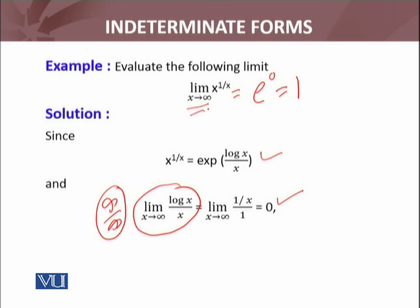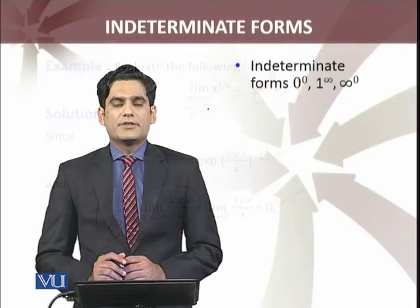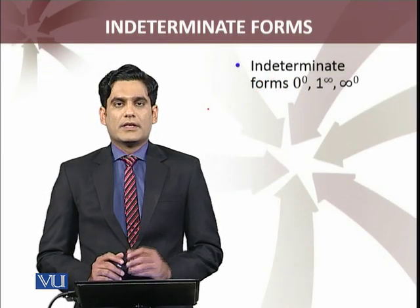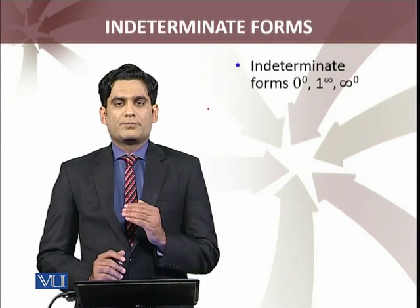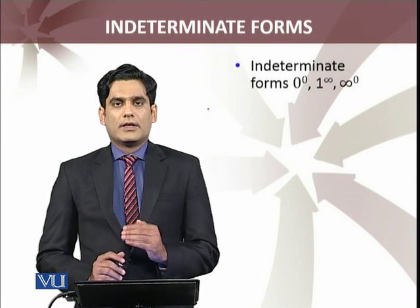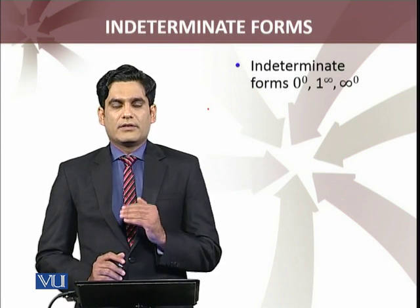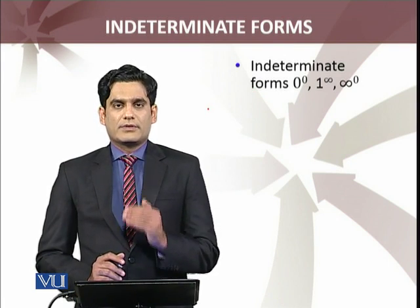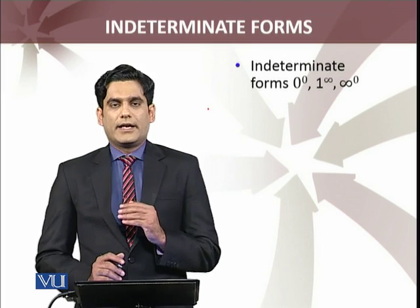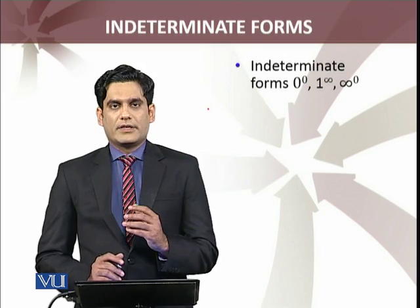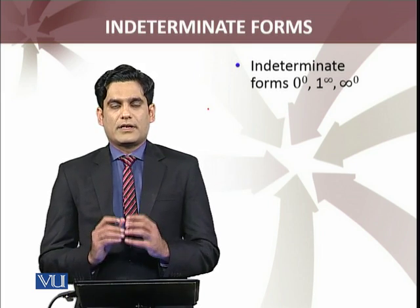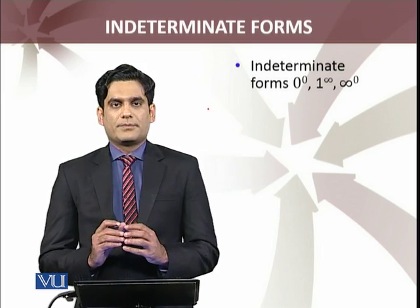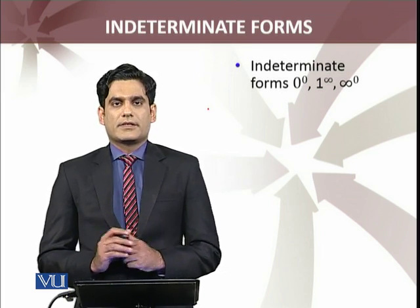So limit of that required function is e raised to power 0, which equals 1. So we have discussed the three indeterminate exponential forms — 0 raised to power 0, infinity raised to power 0, and 1 raised to power infinity — और इनकी कुछ examples हमने discuss की हैं.